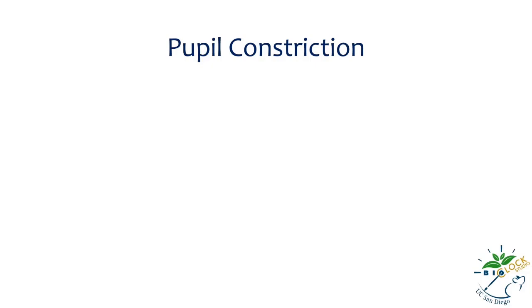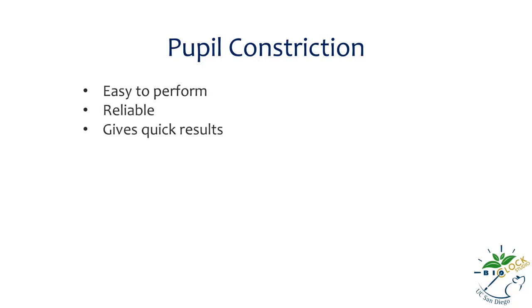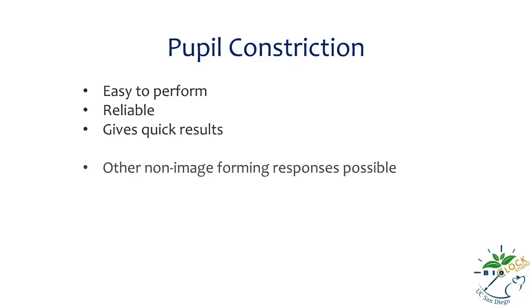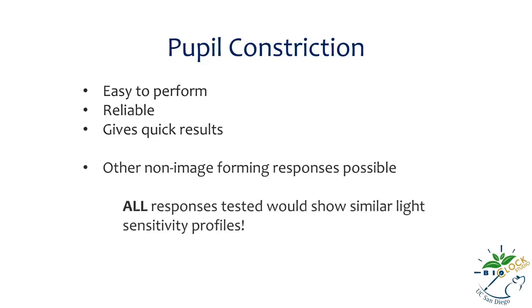Pupil constriction is an attractive method for testing behavioral responses to light because it is easy to perform, is reliable, and gives quick results. Although we chose to talk about pupil constriction in this series of videos, there are other non-image-forming responses to light that could also be used to test light sensitivity. Regardless of the response measured, these all show similar light sensitivity profiles. In this video, we introduced pupil constriction as a response to light which can be used to measure light sensitivity. In the next video, we will show how this can be done in an experiment.